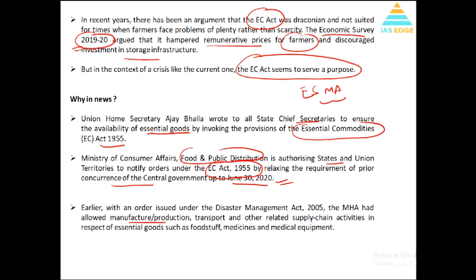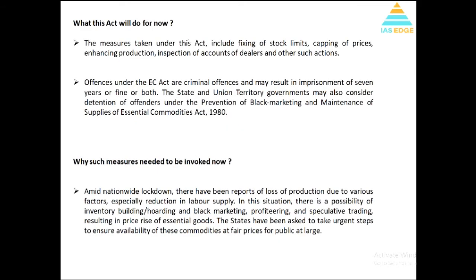Additionally, an order issued by the Disaster Management Act by the Ministry of Home Affairs has allowed manufacture, production, transport, and other related supply chain activities in respect of essential commodities such as foodstuffs, medicines, and medical equipment. So the Disaster Management Act allows essential items to be produced during this COVID crisis, and both the Essential Commodities Act and Disaster Management Act provisions will be used. Under these measures: stock limits will be fixed, prices will be capped, production will be enhanced, and inspection of dealers will happen.